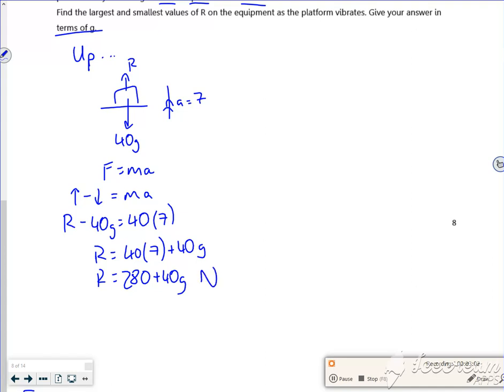That's going up. Going down. Got my 40g. Got my R. This time it's going down with an acceleration of 7. So if I do F equals MA. The force in the direction of travel minus the force opposing is mass times acceleration.